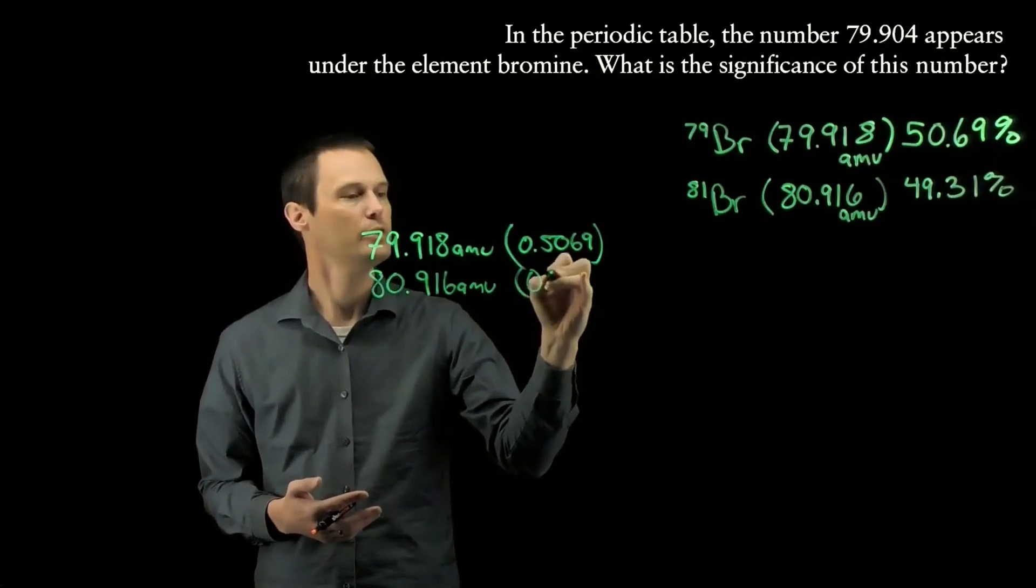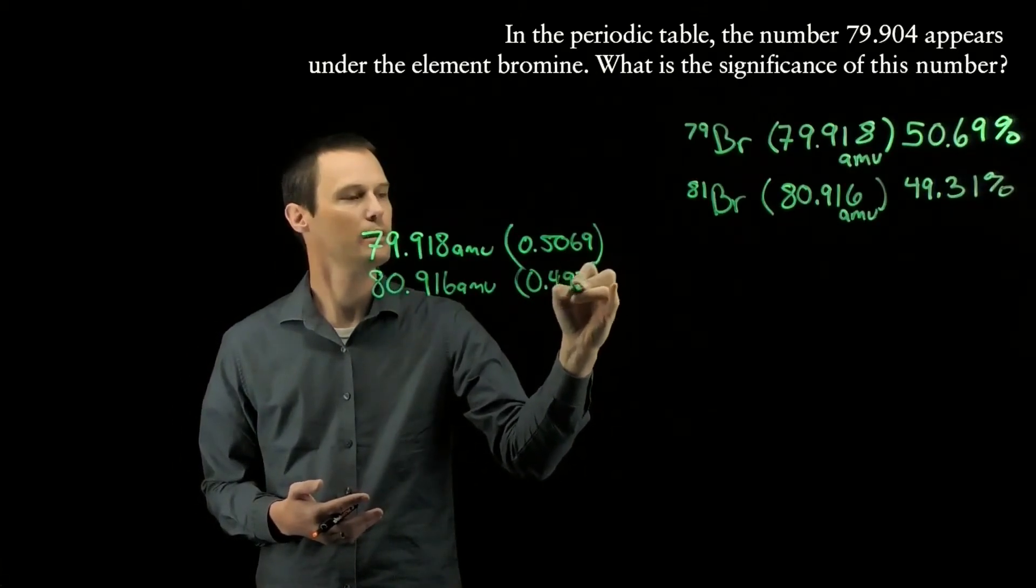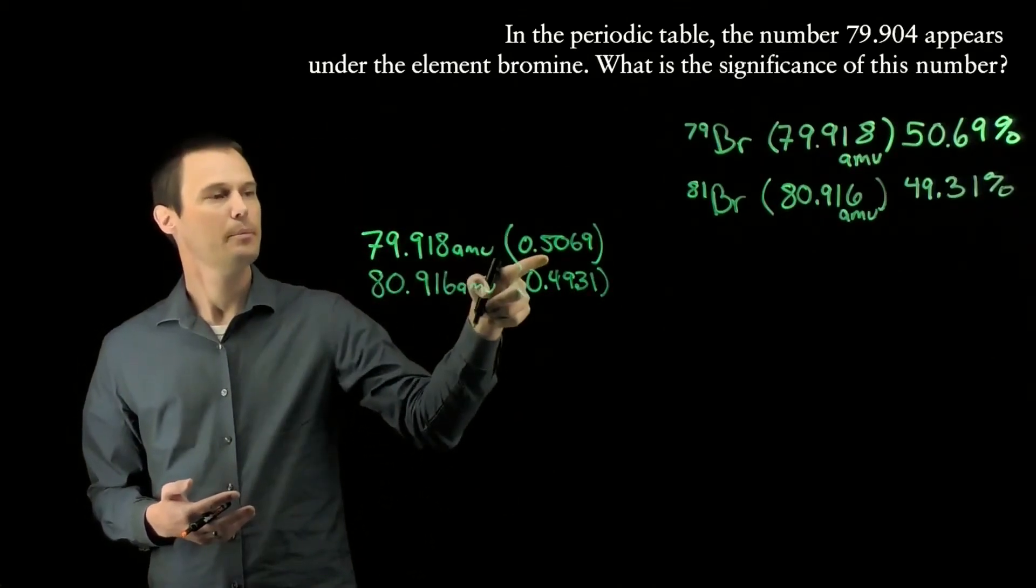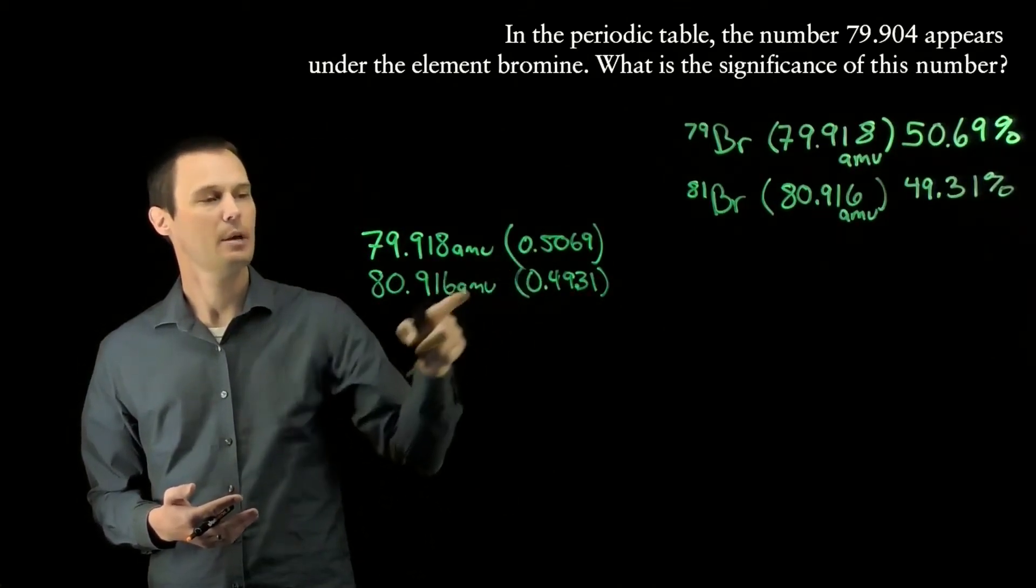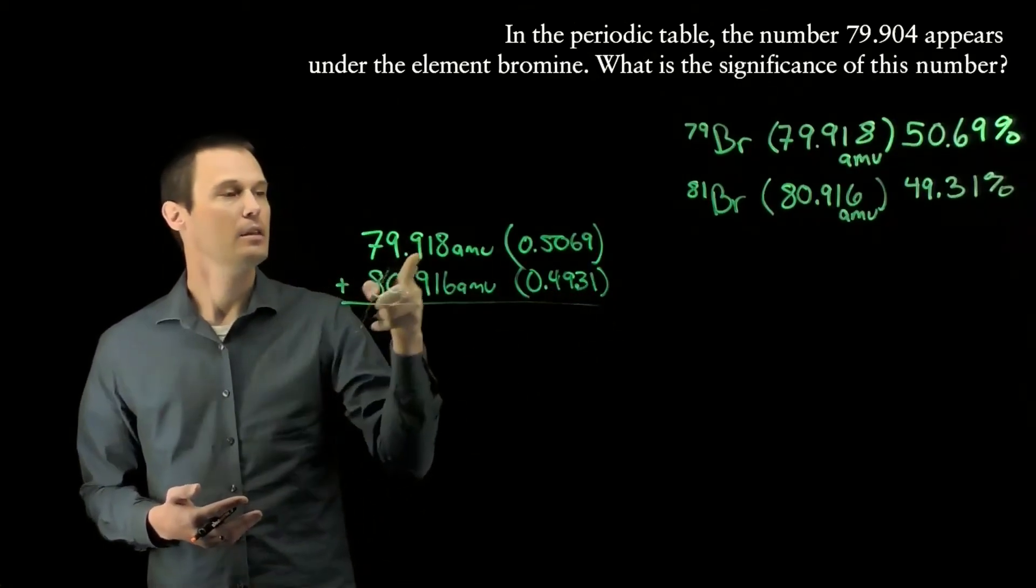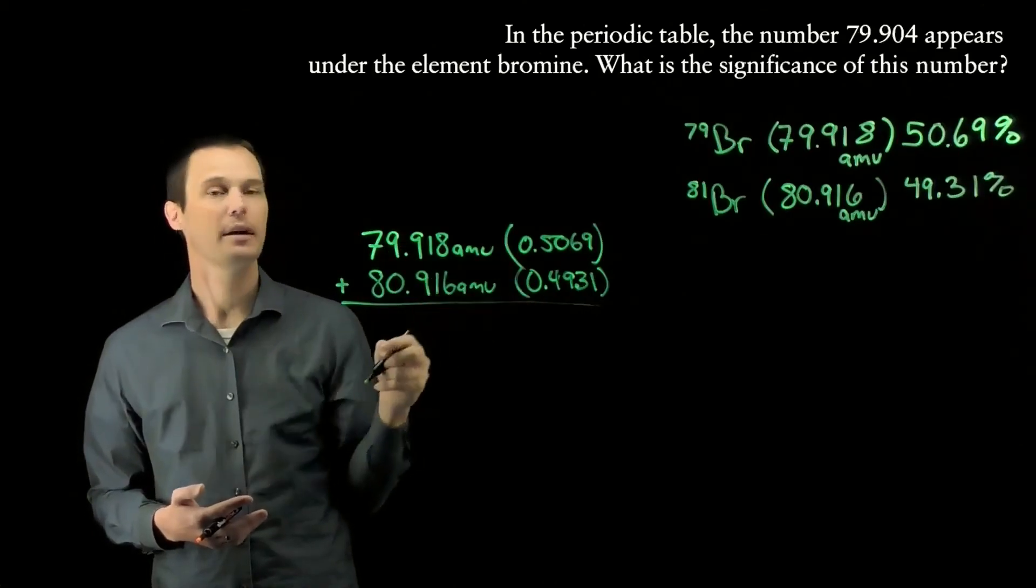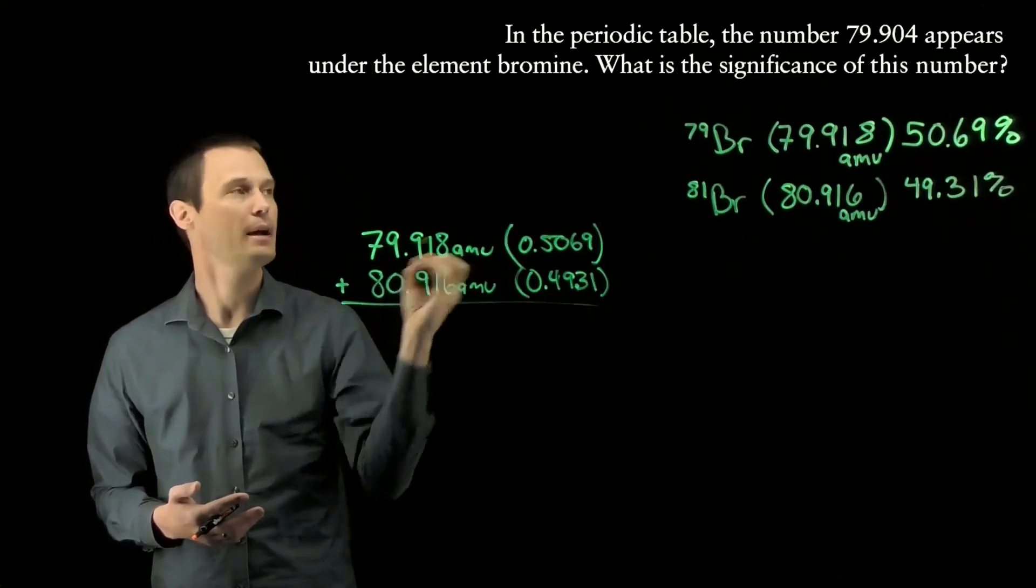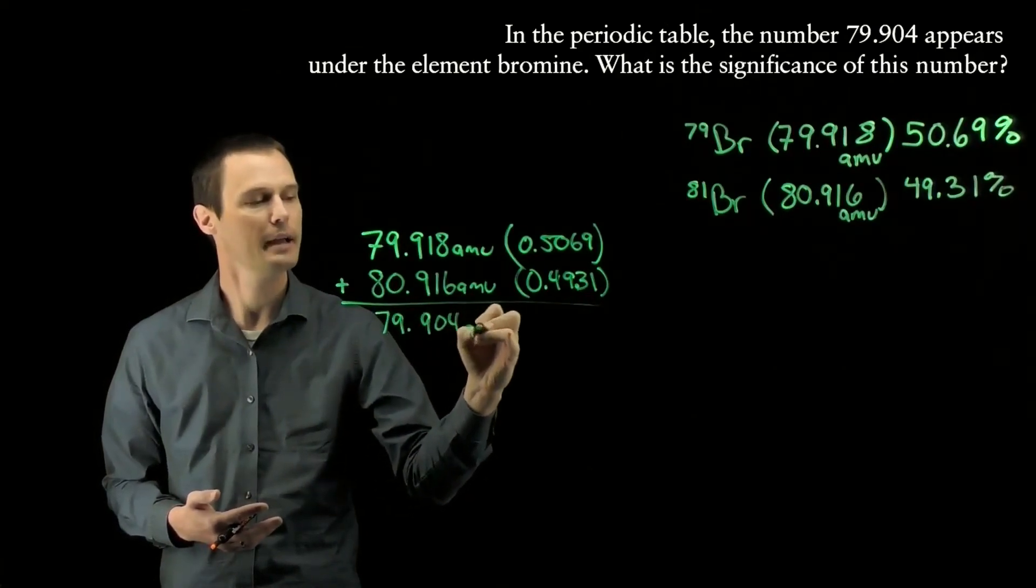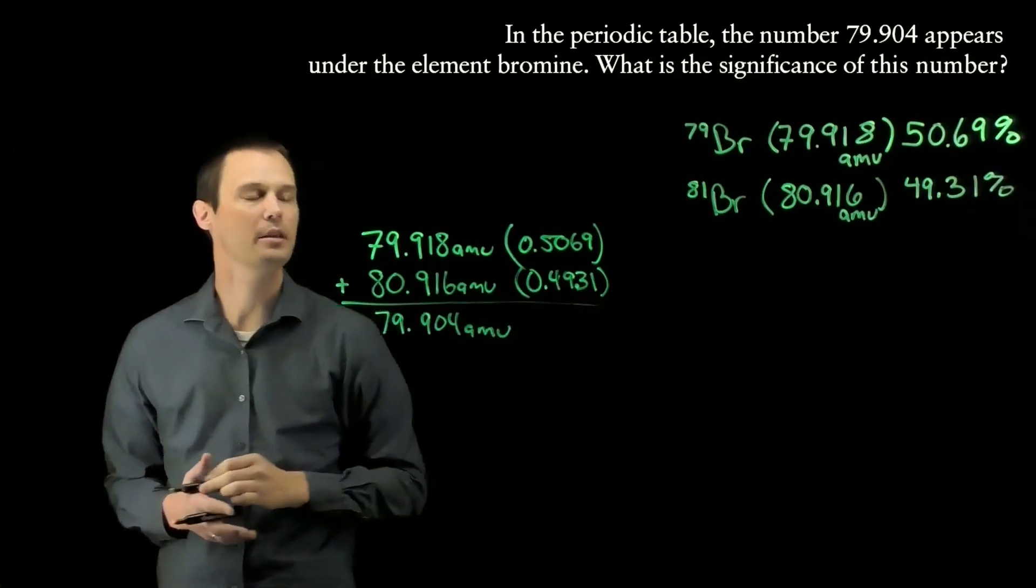If we multiply 79.918 amu by its isotopic abundance and 80.916 by its isotopic abundance and add those together, the sum of these products is our weighted average atomic mass, that is the 79.904 amu that we see on the periodic table.